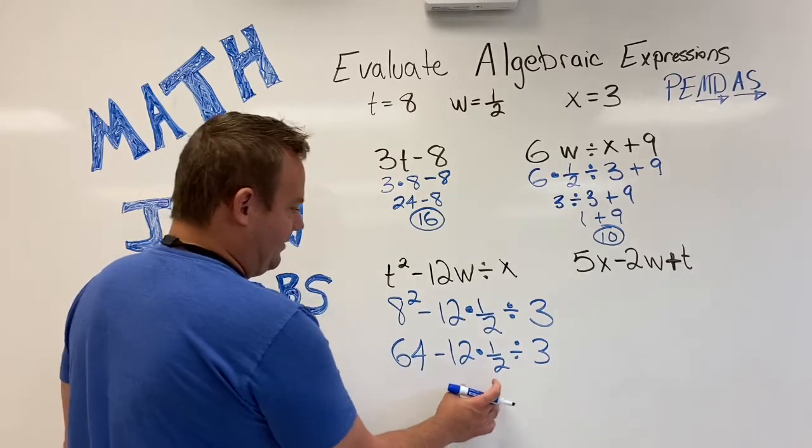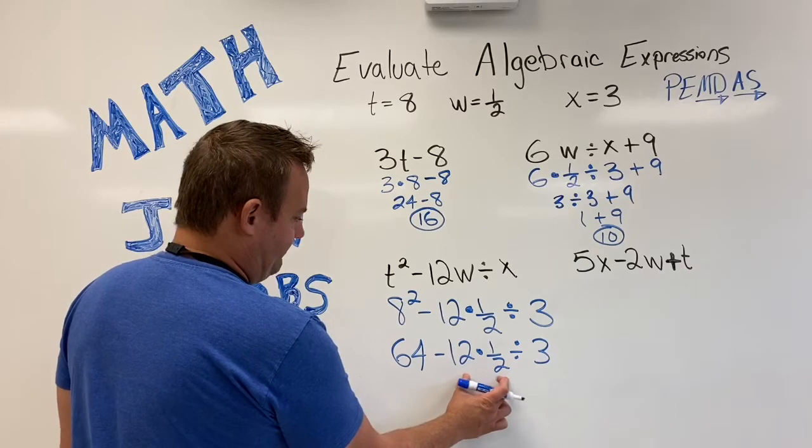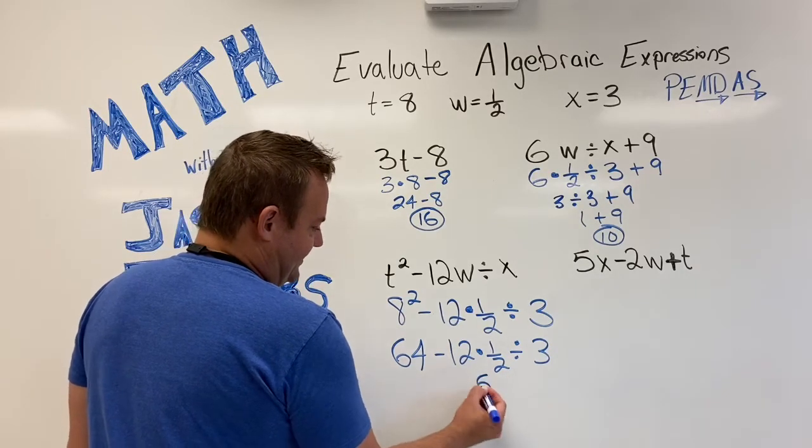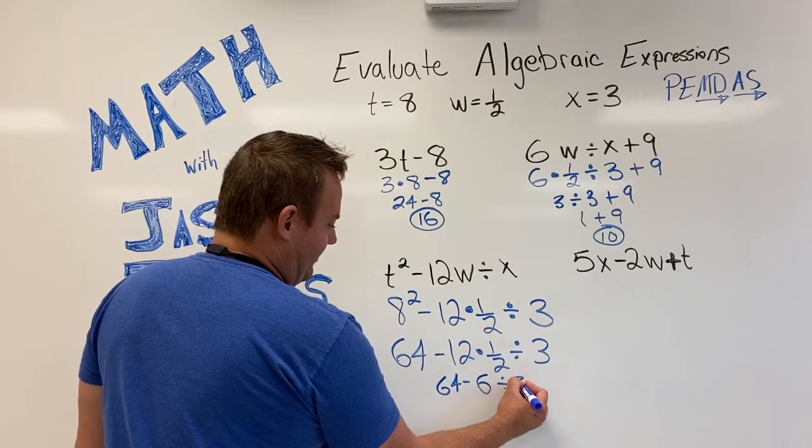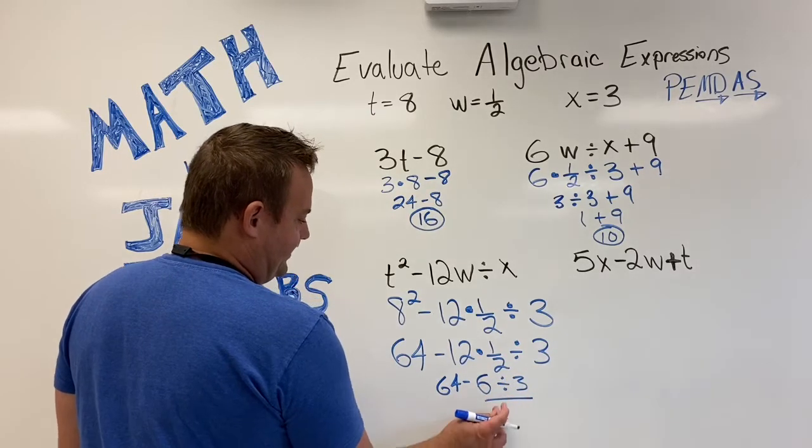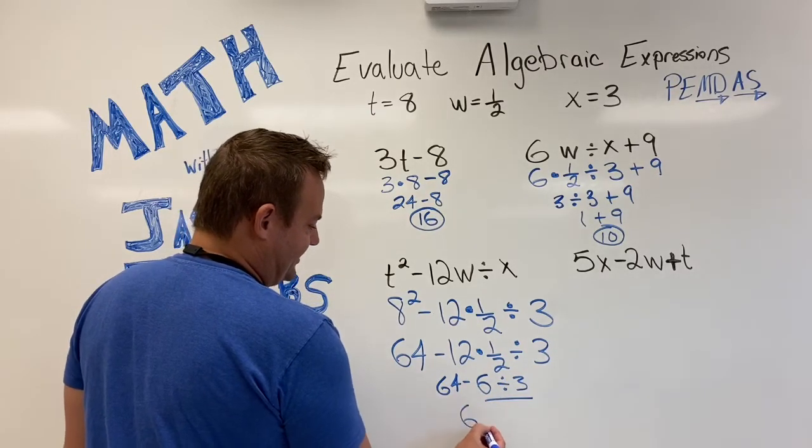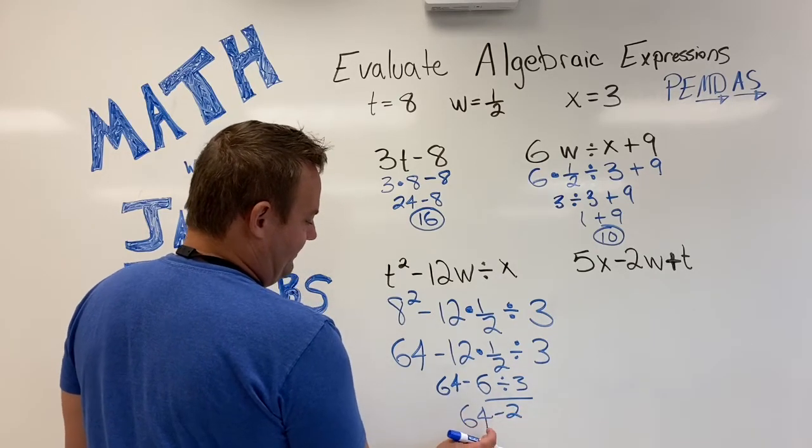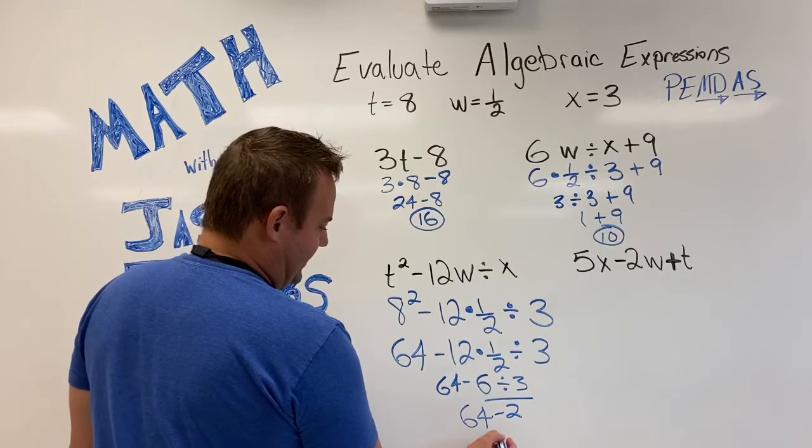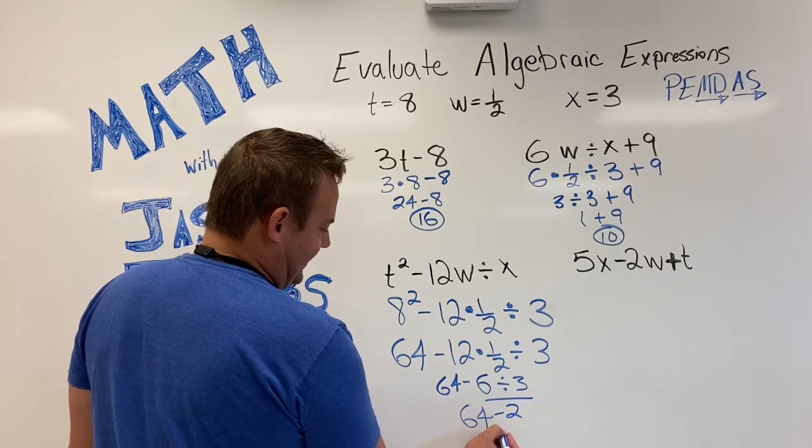And now we do the multiplication here. 12 times a half. That's 6. So 64 minus 6 divided by 3. And now 6 divided by 3 is next. So we have 64 minus 2. And 64 minus 2 is 62.